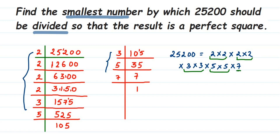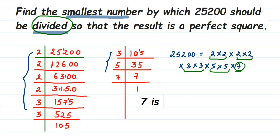As you can see, 7 is a single factor — it doesn't have any pairing. If we divide 7 from this number, it will become a perfect square, because all remaining factors are properly paired. Therefore, the smallest number to be divided is 7.